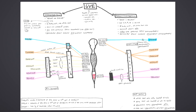Some important high-yield points: white rami are only located at T1 to L2, since these are the only spinal levels associated with sympathetics. Gray rami are located at all 31 spinal levels, and they are only associated with postganglionic sympathetics destined for the body wall. White rami carry preganglionics only, whereas gray rami carry only postganglionics. On your cadaver, white rami are larger and are lateral to gray rami. Finally, splanchnics carry preganglionic fibers only.